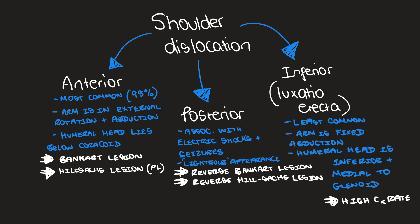Inferior dislocations are by far the least common. Interestingly, the patient will present with their arm in fixed abduction — pointing up — usually with their hand resting on their head. On the x-ray you'll see the humeral head is inferiorly displaced and medial to the glenoid. There is a very high complication rate of soft tissue and bony injuries with this type of dislocation.